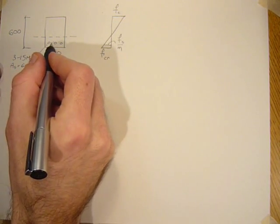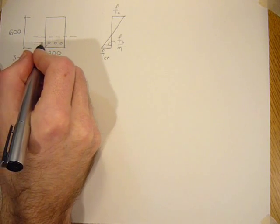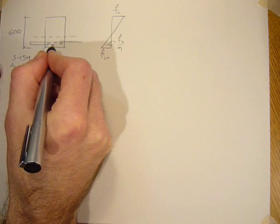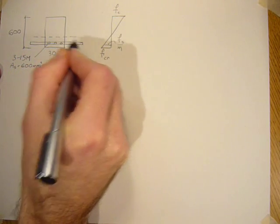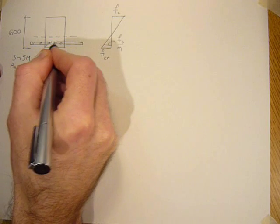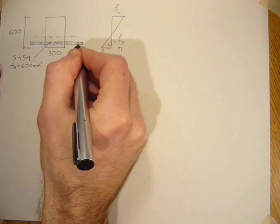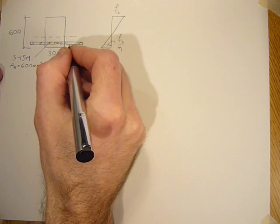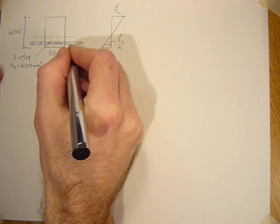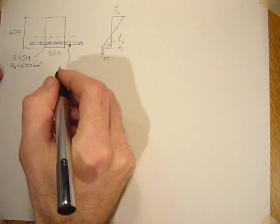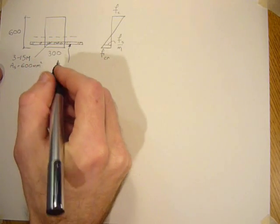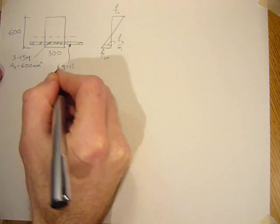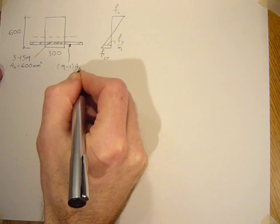Now these three 15M bars can be lumped into an equivalent concrete section. I'll just hatch it here. And the area of this transformed section of rebar to concrete is the modular ratio minus 1 times the area of the steel.